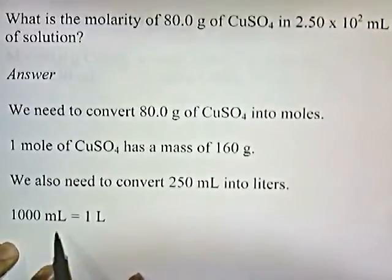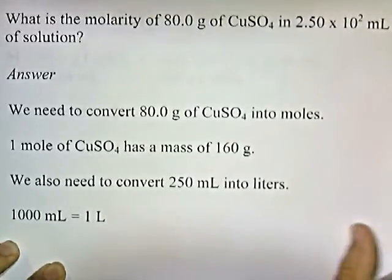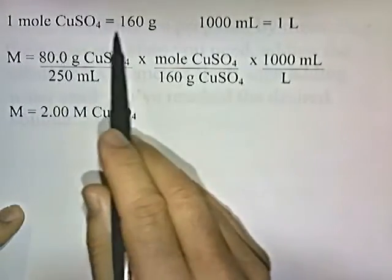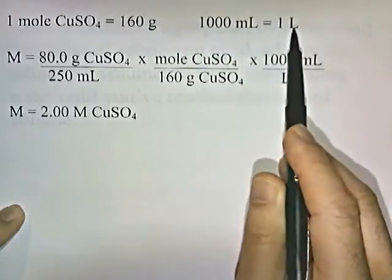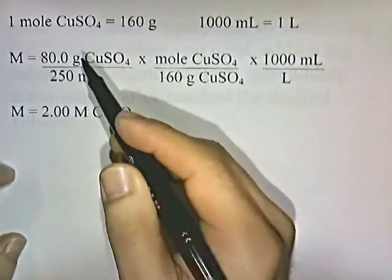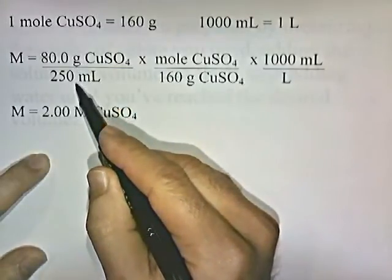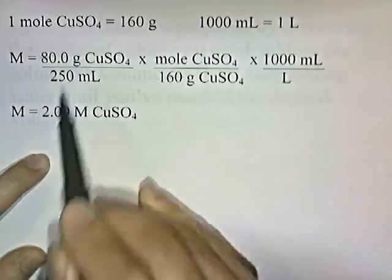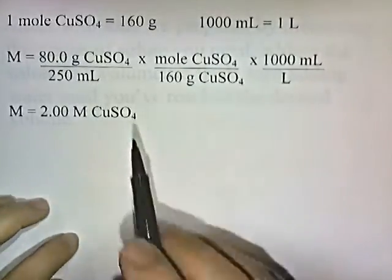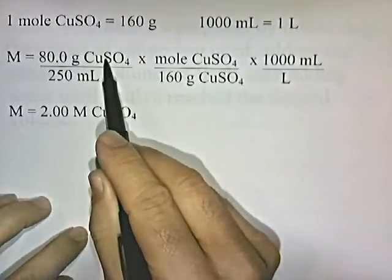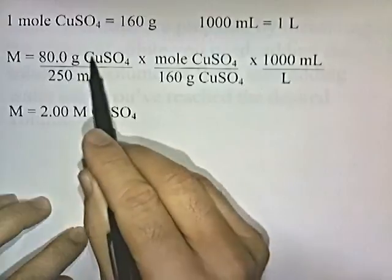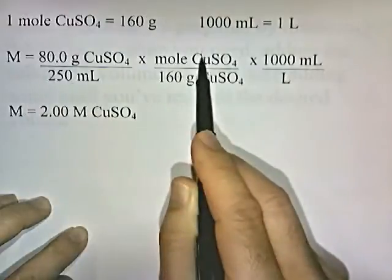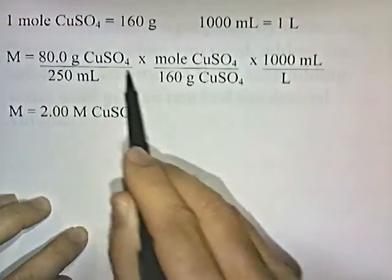Remember that 1,000 milliliters equals one liter. Here's the setup: one mole of copper sulfate is 160 grams, and 1,000 milliliters is one liter. They give us 80 grams per 250 milliliters, so we convert grams into moles and milliliters into liters. We have grams of copper sulfate on top — to get rid of it, we put 160 grams on the bottom and one mole of CuSO₄ on top.